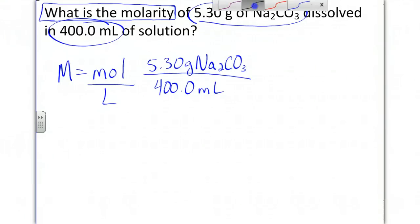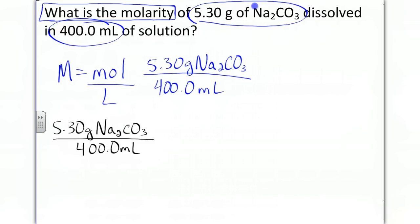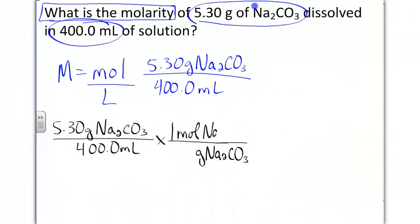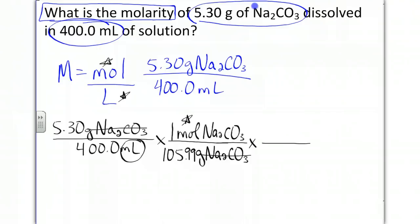Rewriting: 5.30 grams of sodium carbonate over 400.0 milliliters. Times — draw a line — bring down grams of sodium carbonate, and we go to 1 mole of sodium carbonate. The molar mass of sodium carbonate is 105.99, so we can cancel grams of sodium carbonate and we have moles at the top. Now we handle the bottom: take the milliliters and bring them up, so milliliters cancel and we go from milliliters to liters, because 1 liter equals 1,000 milliliters. Now we have liters at the bottom.